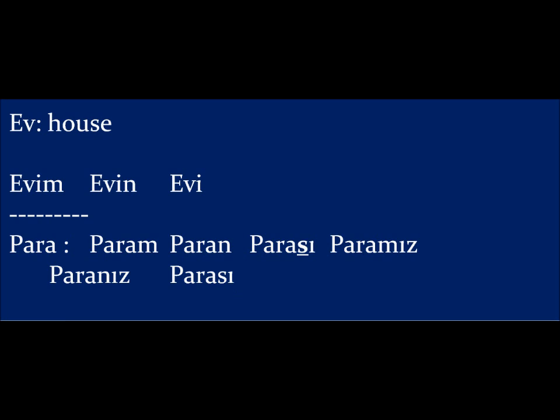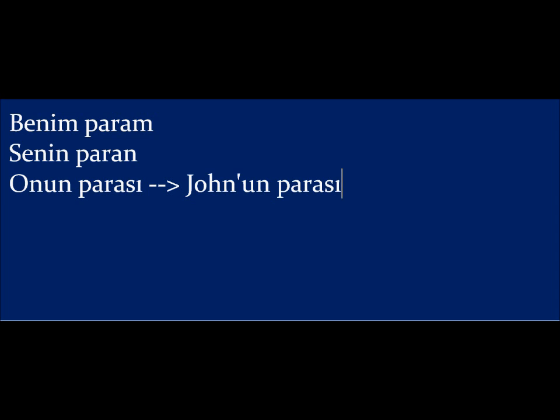This S is also used in genitive form, because that's also possessive. For example, 'benim param' — but we can omit 'benim' since 'param' already ends in M showing it's mine. 'Senin paran' is your money, 'onun parası' is his money. If it's not 'onun' but someone else, like John's money, it's 'John'un parası.' This entire construction — the third-person possession form — is called genitive. We use S only when the third person possesses something and the possessed thing ends in a vowel.